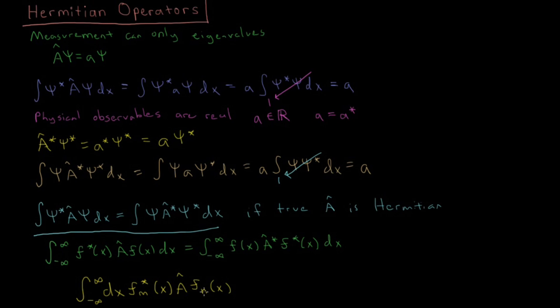So these are in general, and usually what we'll see are, these are two different solutions to the same Schrodinger equation, they're two different possible wave functions for the same system. And that equals integral minus infinity to infinity dx fn x, A-star, fm star x.